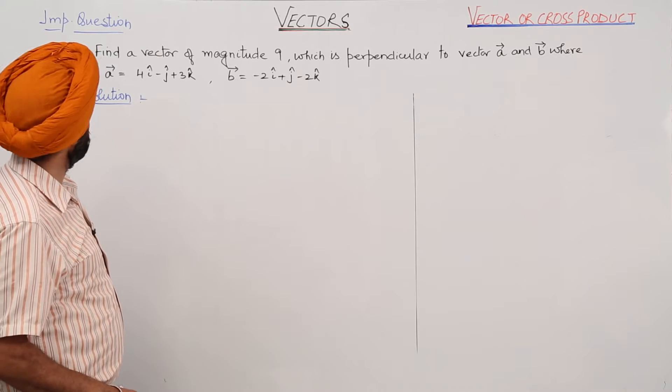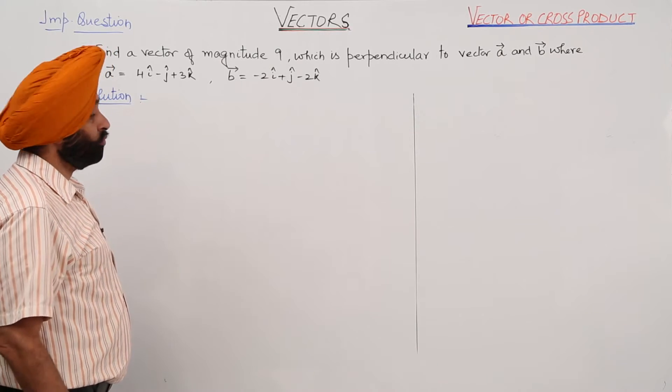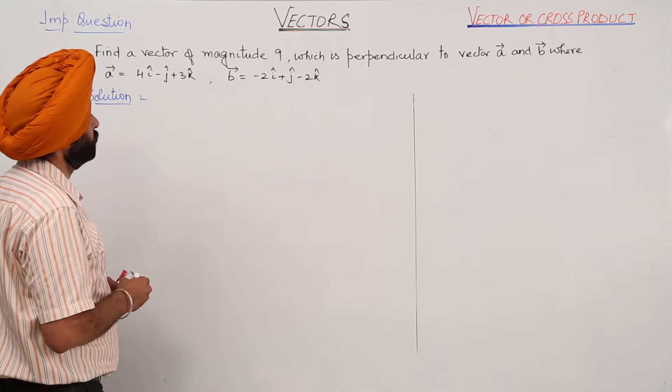Find a vector of magnitude 9 that is perpendicular to vectors A and B, where the components of vector A and vector B are given.